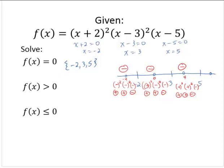Finally, the last interval — let's choose 6. 6 plus 2 is a positive number being squared. 6 minus 3 is a positive number being squared. And 6 minus 5 is positive. So I have a positive times a positive times a positive, which is positive.